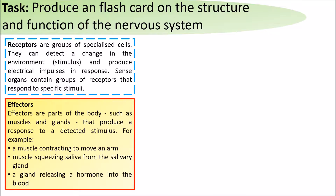Effectors are parts of the body such as muscles or glands that produce a response to a detected stimulus. For example, a muscle contracting in an arm, a muscle squeezing saliva from a salivary gland, or a gland releasing a hormone into the blood.